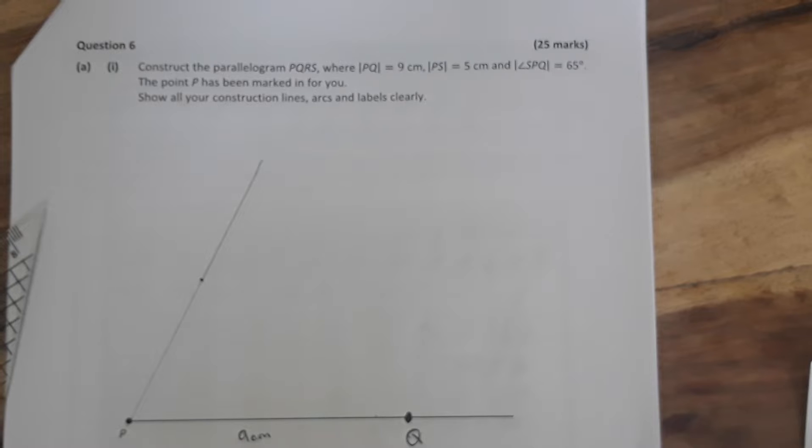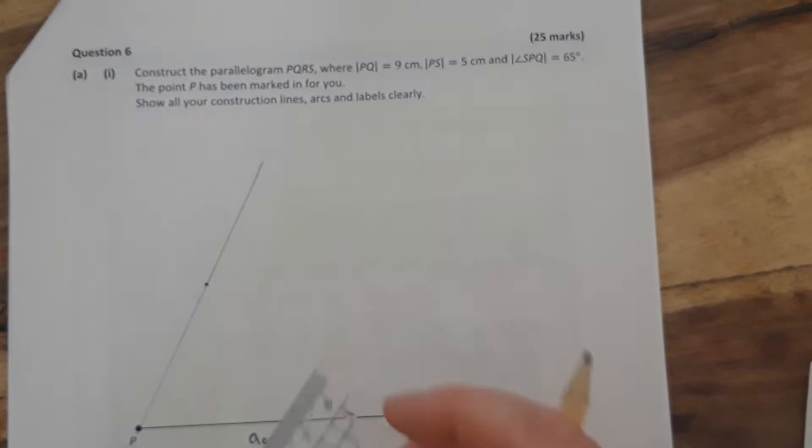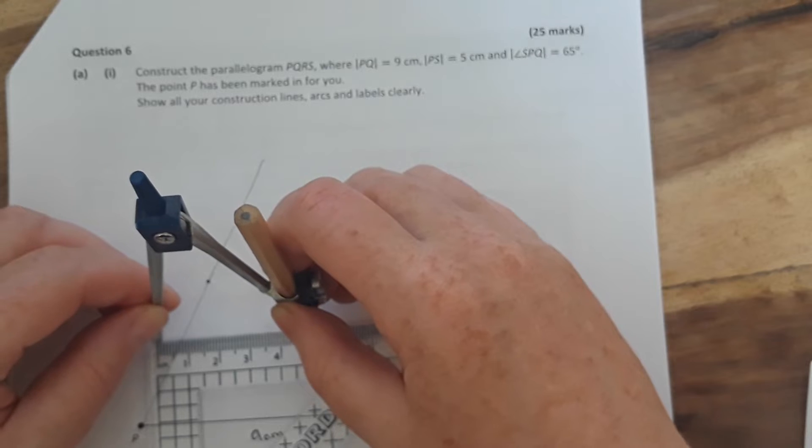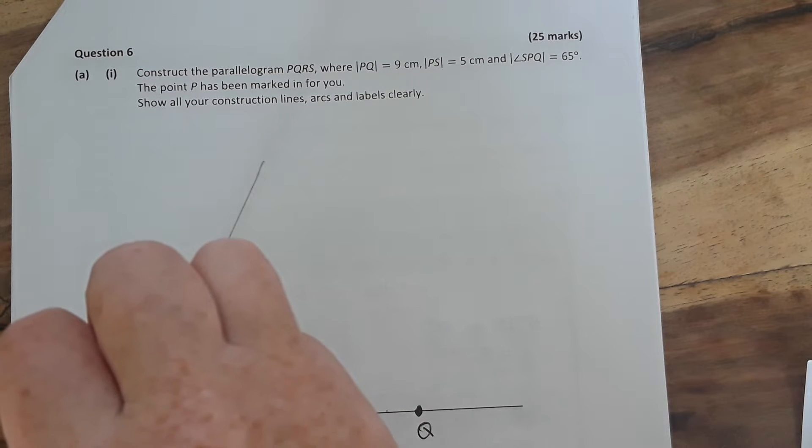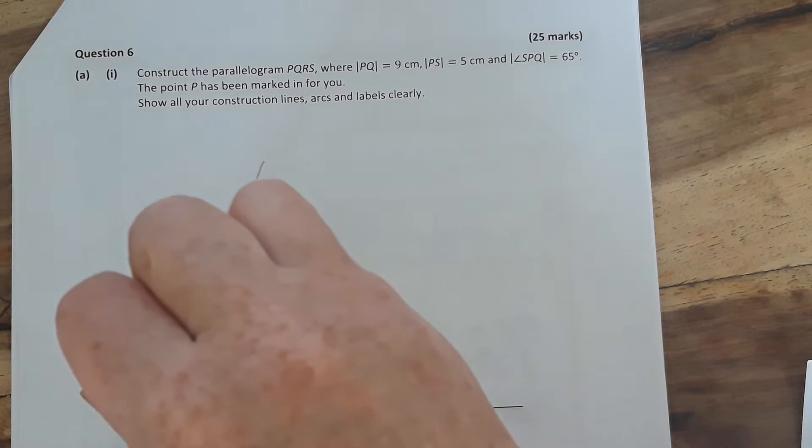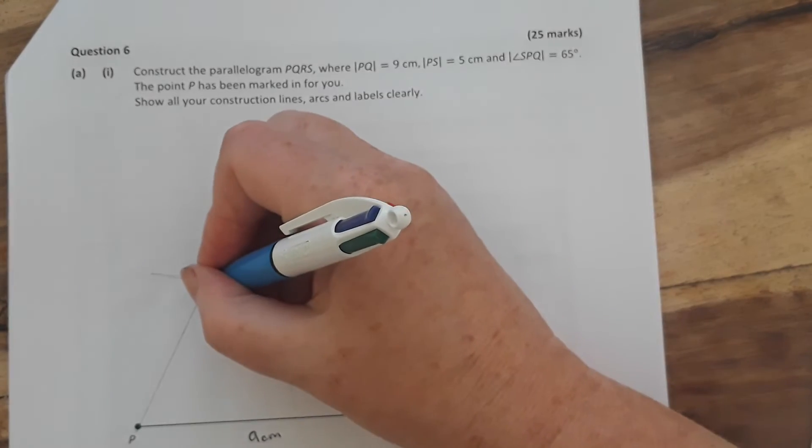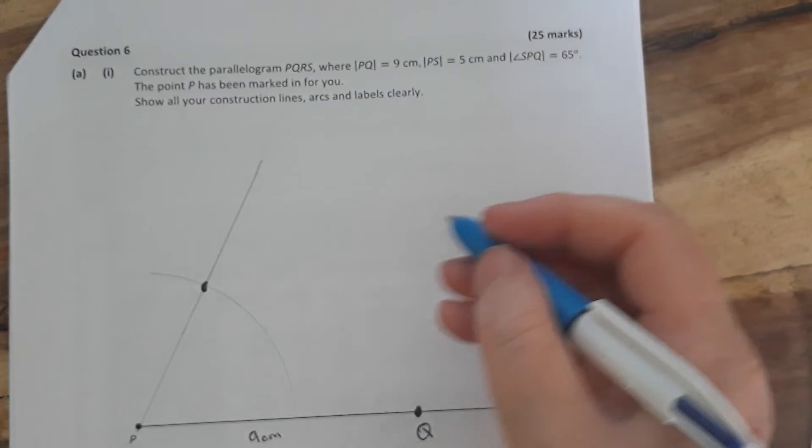The next thing to do is you want the line PS which is five centimeters long. So again get your ruler. You're going to go from P, get your compass, and on your compass you measure five centimeters. So do it along your ruler, measure five centimeters. So that's five centimeters, have it open at five centimeters. Then put your compass at S and draw an arc, and wherever the arc cuts your line, now it's slightly below where I have the first mark, that is your S.